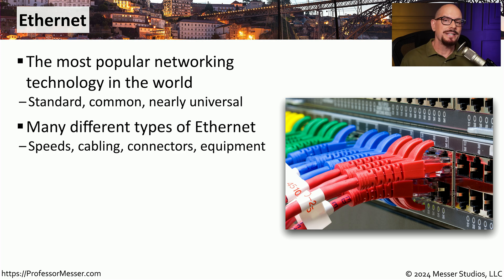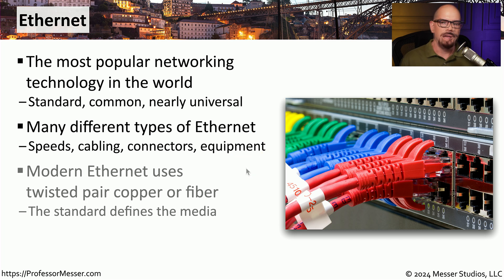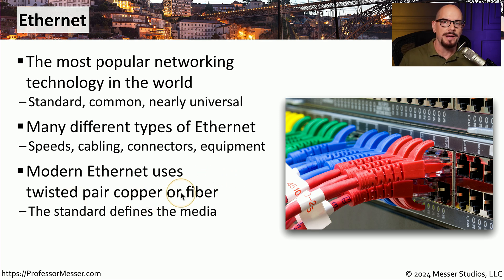There are also many different types of ethernet. They vary in speed, the type of cabling we use, the connectors at the end of these cables, and the type of equipment that's required to connect all of these devices together. Our modern ethernet networks have many different standards for both twisted pair copper cabling and for fiber optic connectivity.